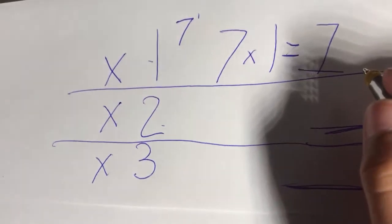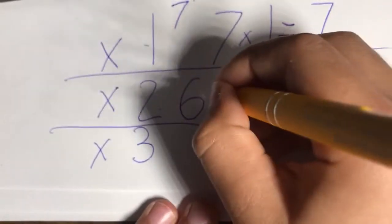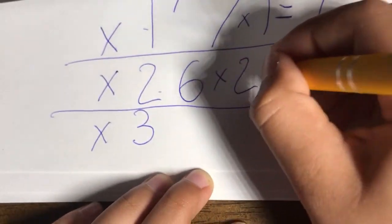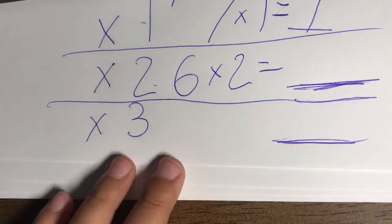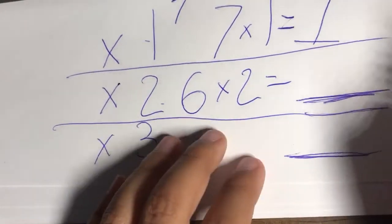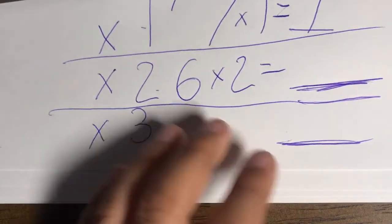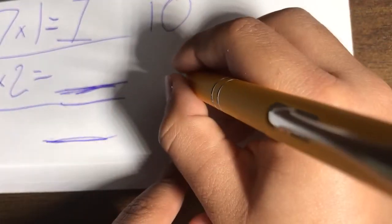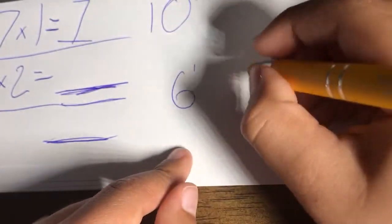So let's do six times two equals blank. Six times two, count by six. I'll move it over here. So six, twelve.